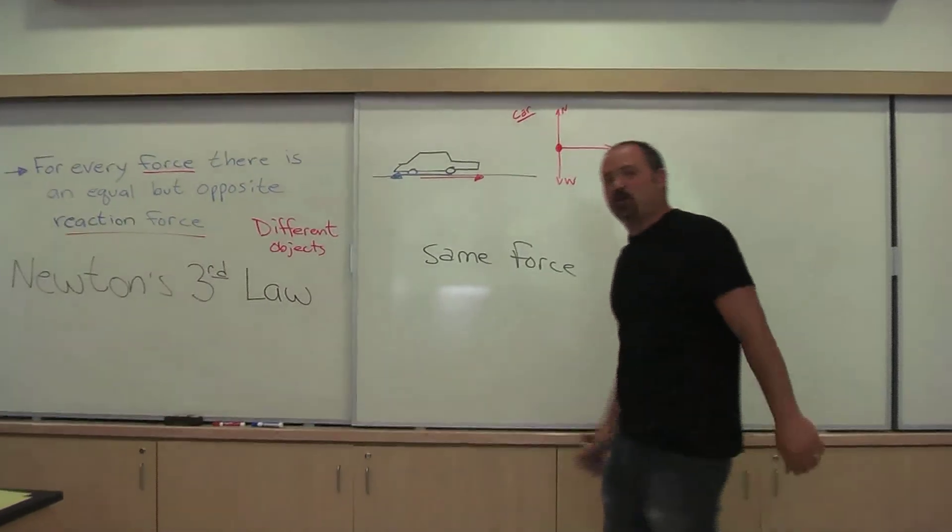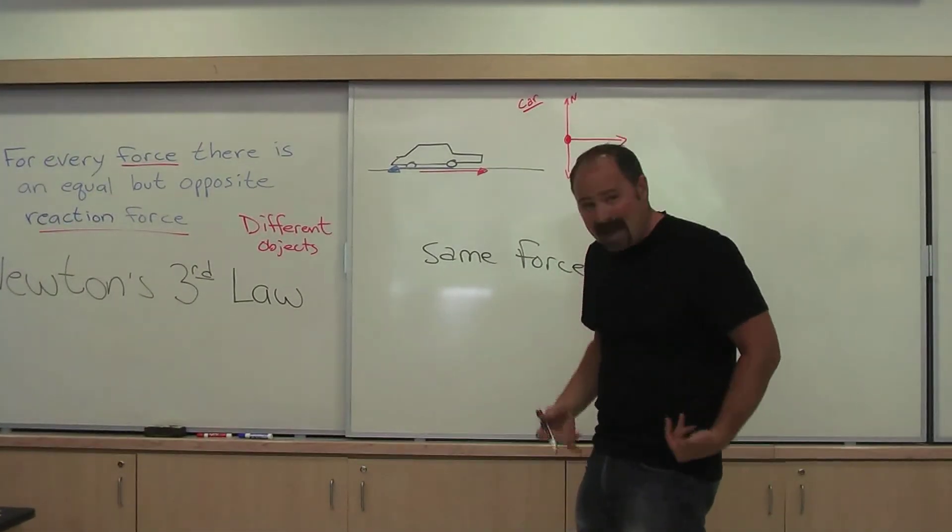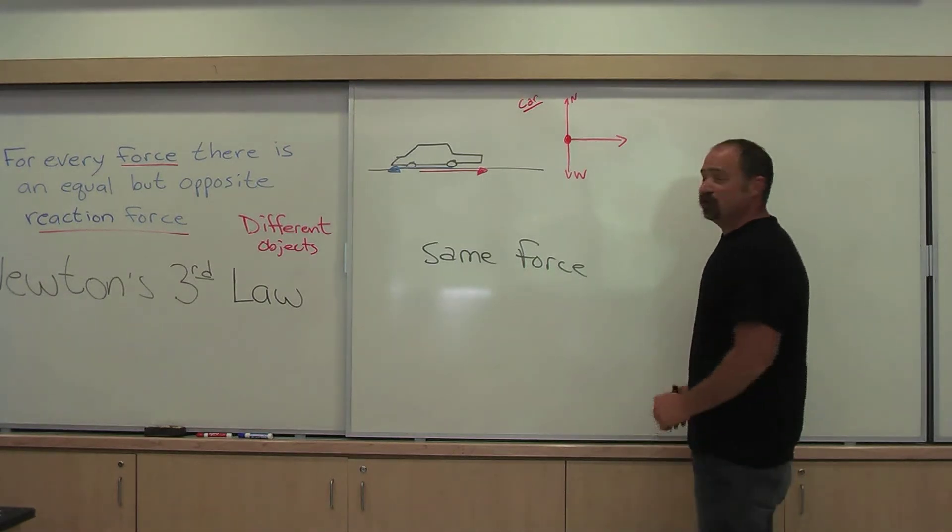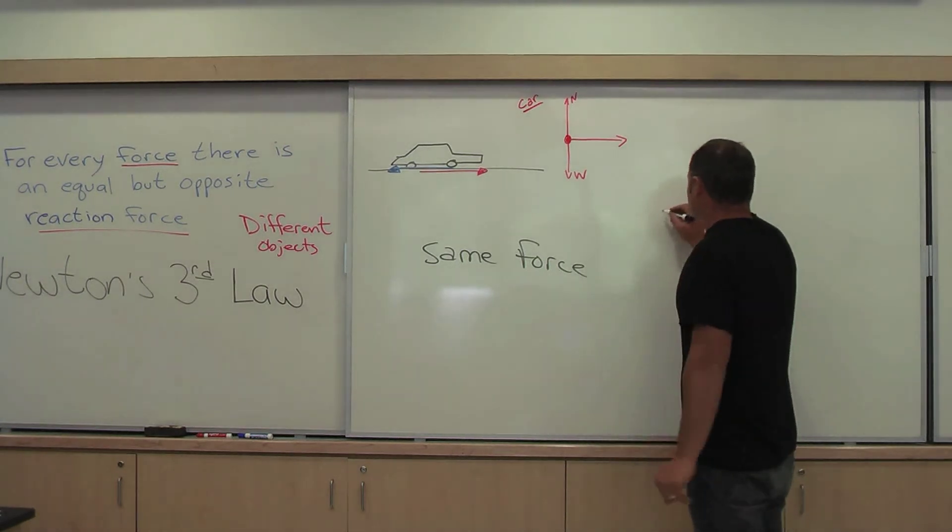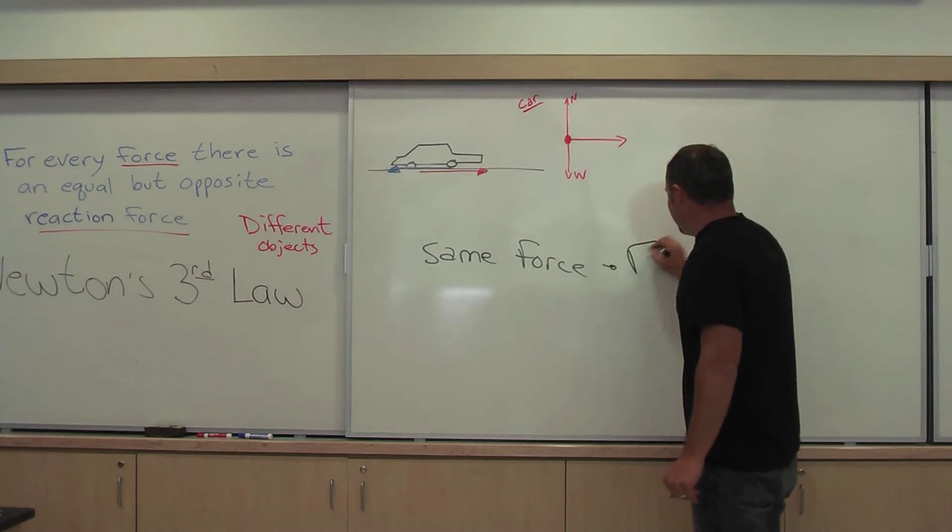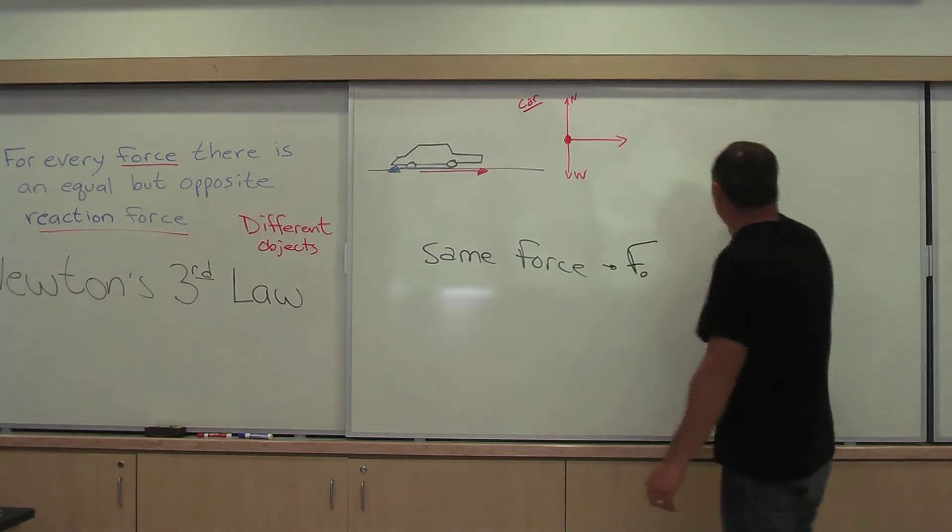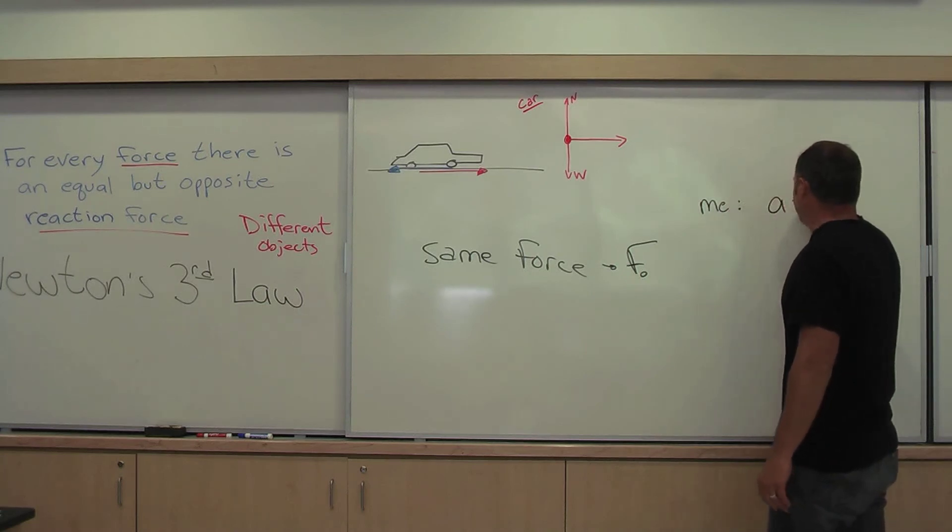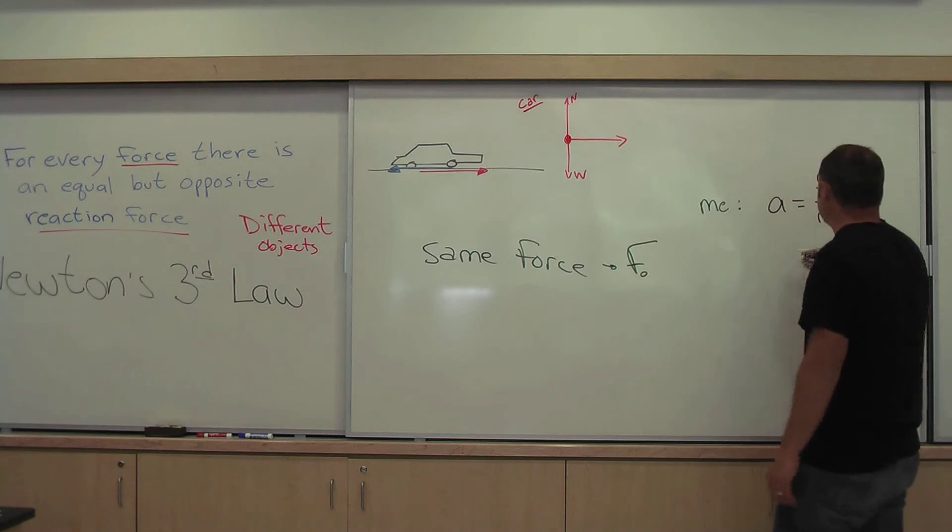But, you might ask yourself, why did I accelerate backwards? Well that's because Brad has a larger mass than I do. So, although it's the same force, let's call it F-naught. When I go to calculate acceleration of me, acceleration is equal to that force with my smaller mass. And therefore, let's draw a large-ish acceleration.